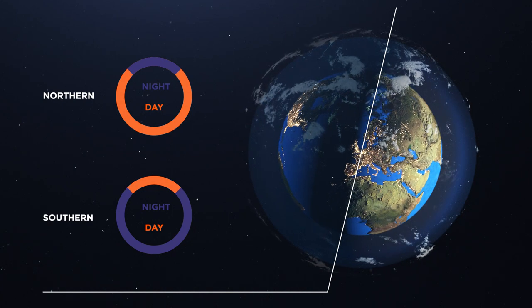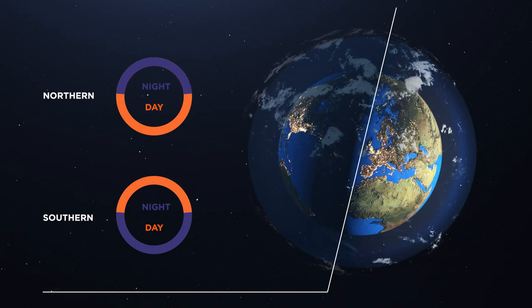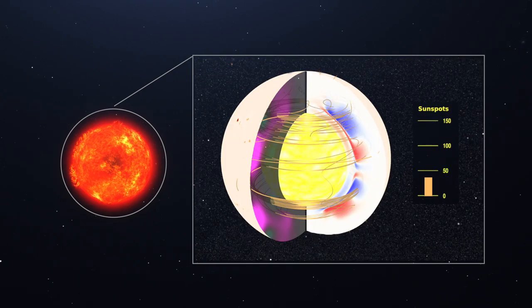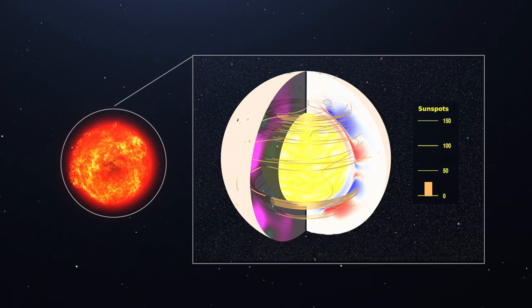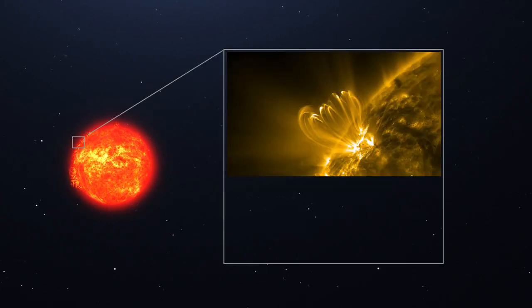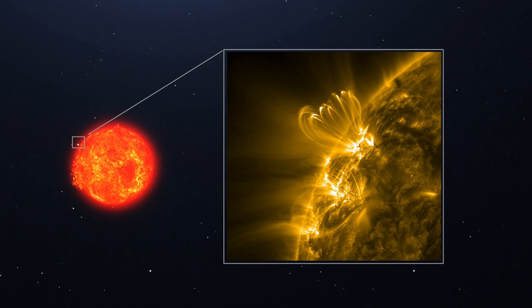This shapes our seasons and the changing temperatures that go with them. Over the span of each 11-year solar cycle, the Sun's activity waxes and wanes, as magnetic field lines that are wound and tangled inside of it occasionally break through to the surface.